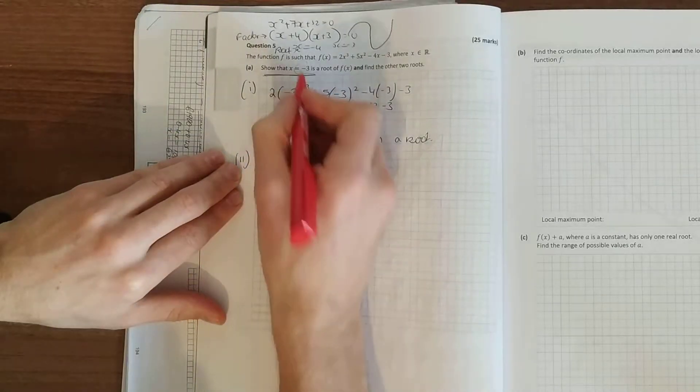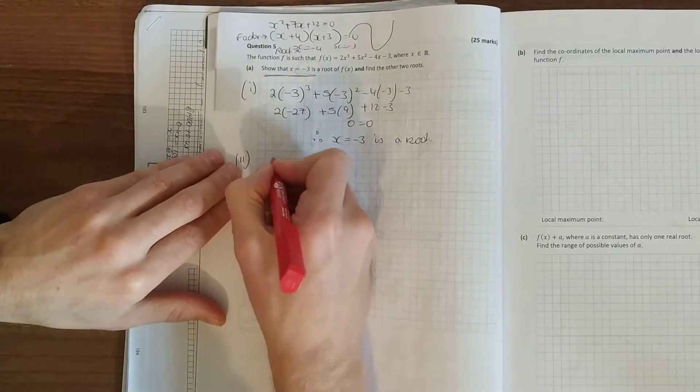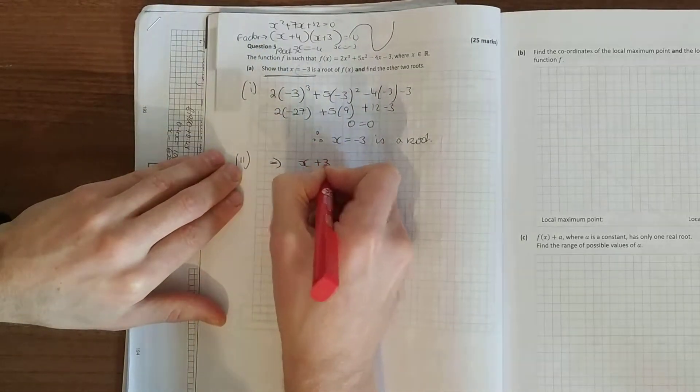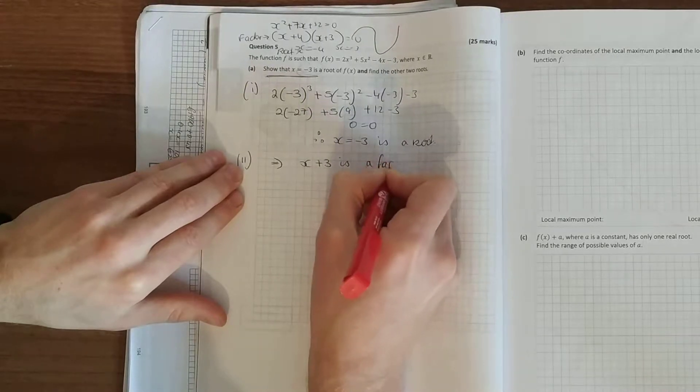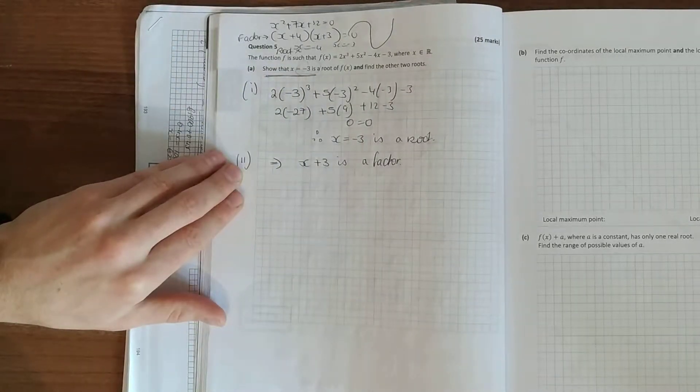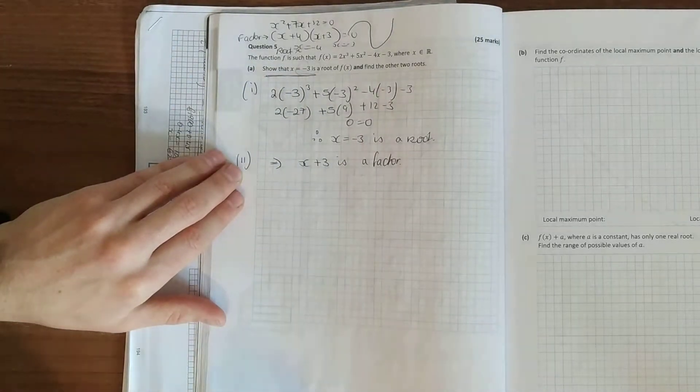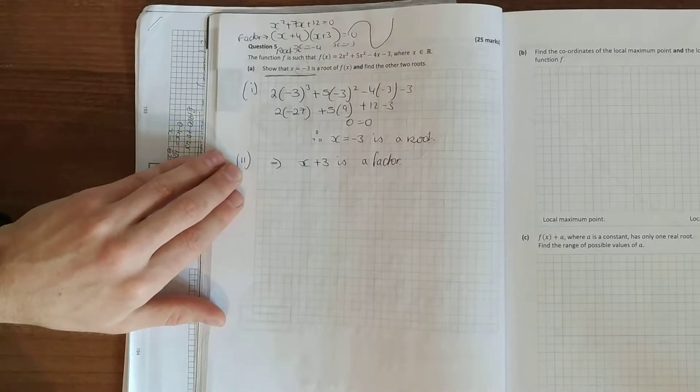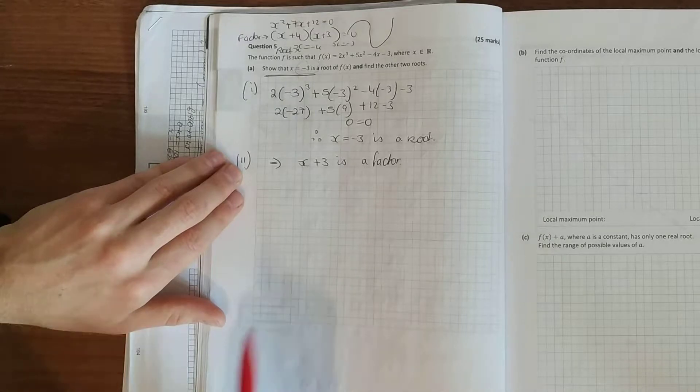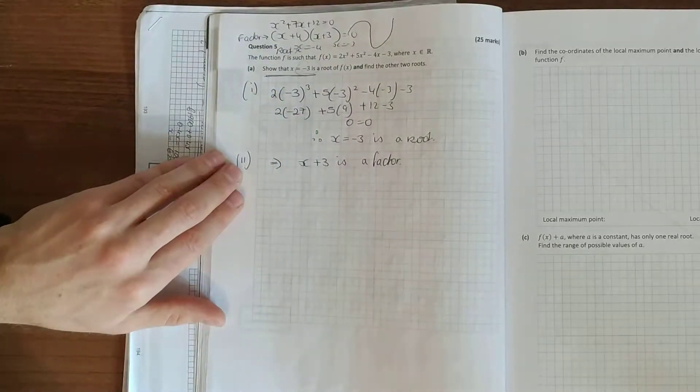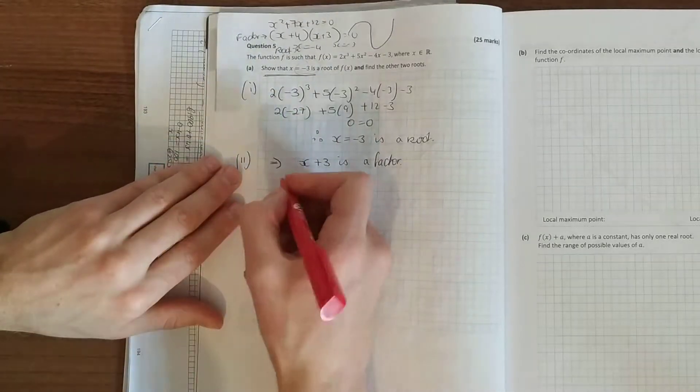So just go back up, so if x equal to minus 3 is a root, that implies that x plus 3 is a factor. And if we have one of the factors, we simply long divide and find the other factors. Now, an x squared function will have 2 factors or 2 roots, and x cubed function will have 3 factors. So do your long division.